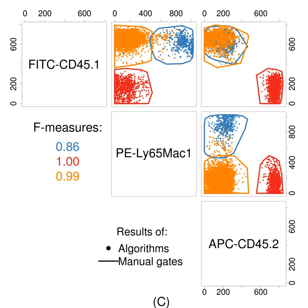Cell populations detected by flow cytometry are often described as having approximately log-normal expression. As such, they have traditionally been transformed to a logarithmic scale. In early cytometers, this was often accomplished even before data acquisition by use of a log amplifier. On modern instruments, data is usually stored in linear form and transformed digitally prior to analysis. However, compensated flow cytometry data frequently contains negative values due to compensation, and cell populations do occur which have low means and normal distributions. Logarithmic transformations cannot properly handle negative values and poorly display normally distributed cell types.